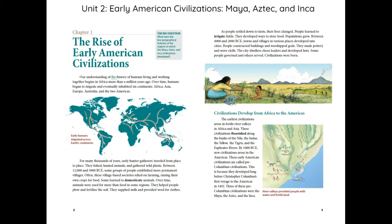Our understanding of the history of humans living and working together begins in Africa more than a million years ago. Over time, humans began to migrate and eventually inhabited six continents: Africa, Asia, Europe, Australia, and the two Americas.